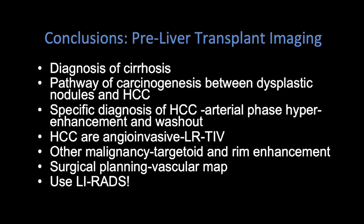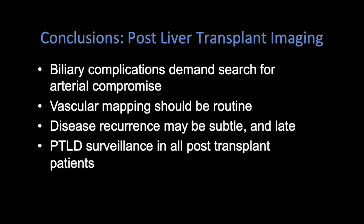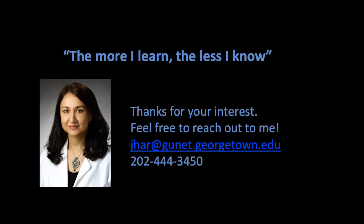In conclusion, when a patient presents for pre-liver transplant imaging, it's important to make a specific diagnosis of cirrhosis, think about the pathways of carcinogenesis between dysplastic nodules and HCC, make a specific diagnosis of HCC relying on arterial phase hyperenhancement and washout, remember that HCCs are angioinvasive and other malignancies can occur in these patients, and remember that surgical planning requires vascular mapping — and of course, to use LIRADS. In patients presenting post-liver transplant: when you see a complication with the bile ducts, always think about the arteries; vascular mapping should be part of your routine; think about disease recurrence; and always think about PTLD. Thank you so much for your interest in this seminar.